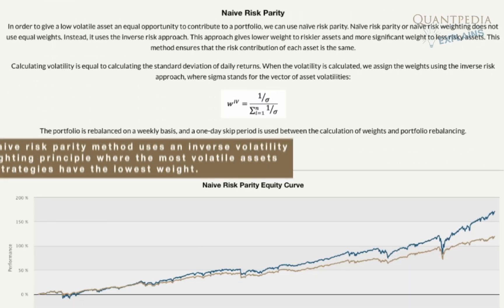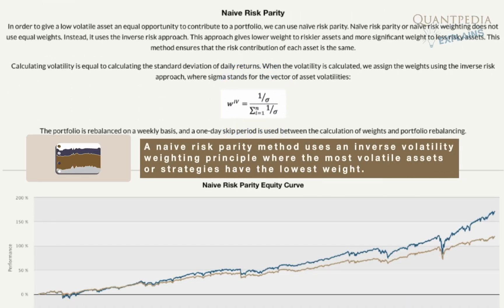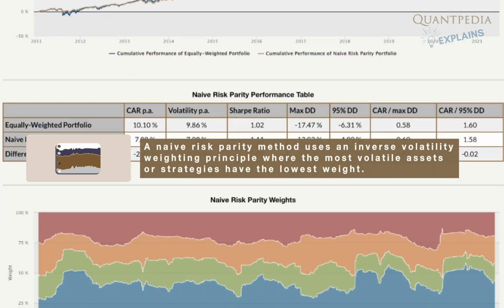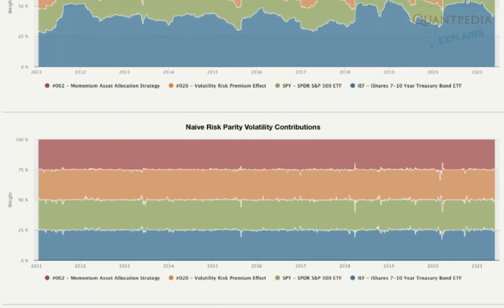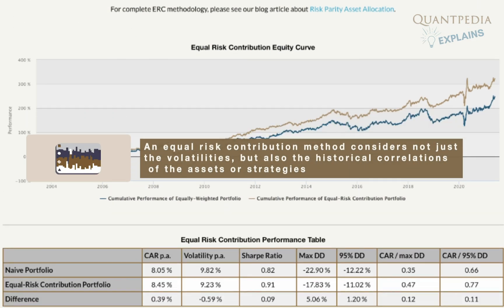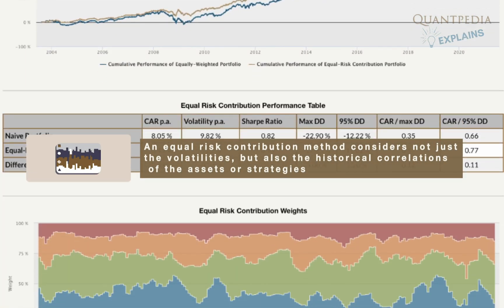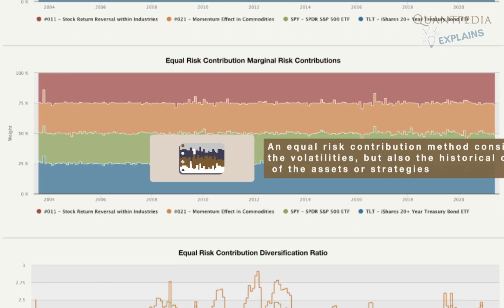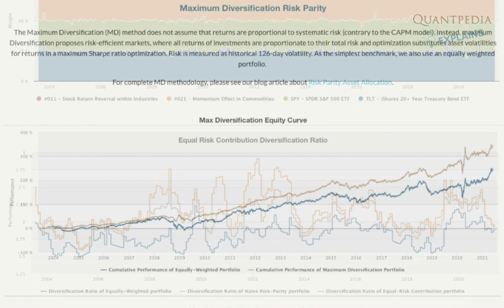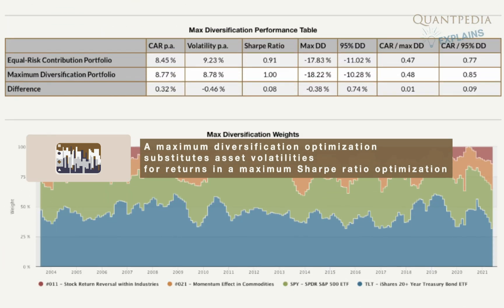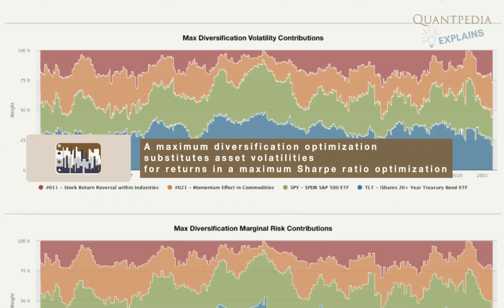A naive risk parity method uses an inverse volatility weighting principle where the most volatile assets or strategies have the lowest weight. Moreover, an equal risk contribution method considers not just the volatilities but also the historical correlations of the assets or strategies. And at last, a maximum diversification optimization substitutes asset volatilities for returns in a maximum Sharpe ratio optimization.